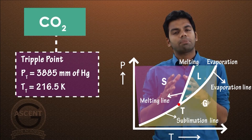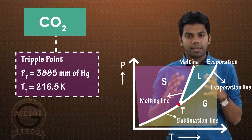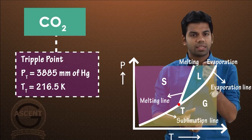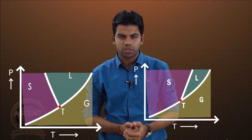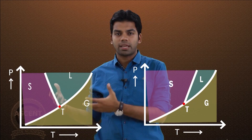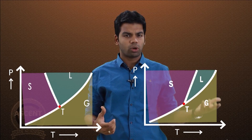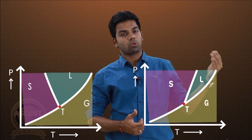So at 3885 mm of Hg and 216.5 Kelvin, we can achieve the triple point for carbon dioxide. Comparing the PT diagrams of water and carbon dioxide: water has a negative melting curve slope, while carbon dioxide and all other substances have a positive melting curve slope.